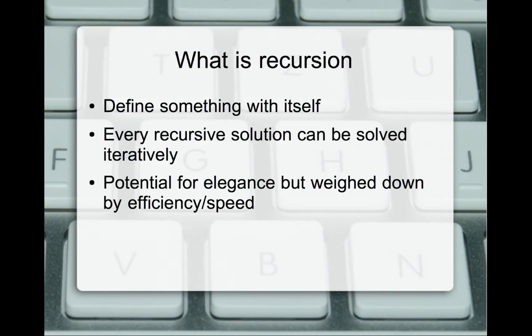The benefit of recursion is sometimes there's a very nice potential for elegance — we can make it very clean and short, very easy to understand, and get to a result quickly. However, that same benefit of elegance and quick definition can often be overwhelmed by the efficiency or speed of the solution. Sometimes those quick and nice solutions don't actually execute very well because of the structural ideas behind them, and we'll see that when we take a look at the Fibonacci sequence.